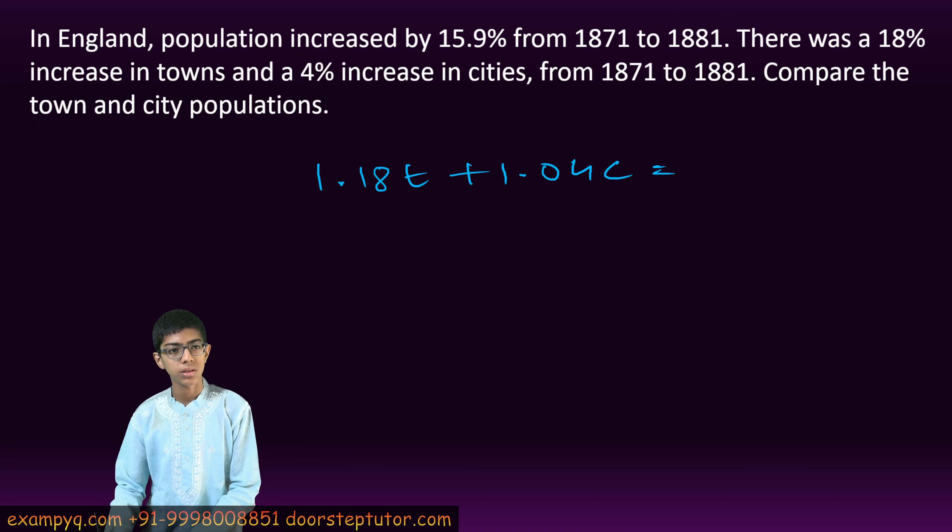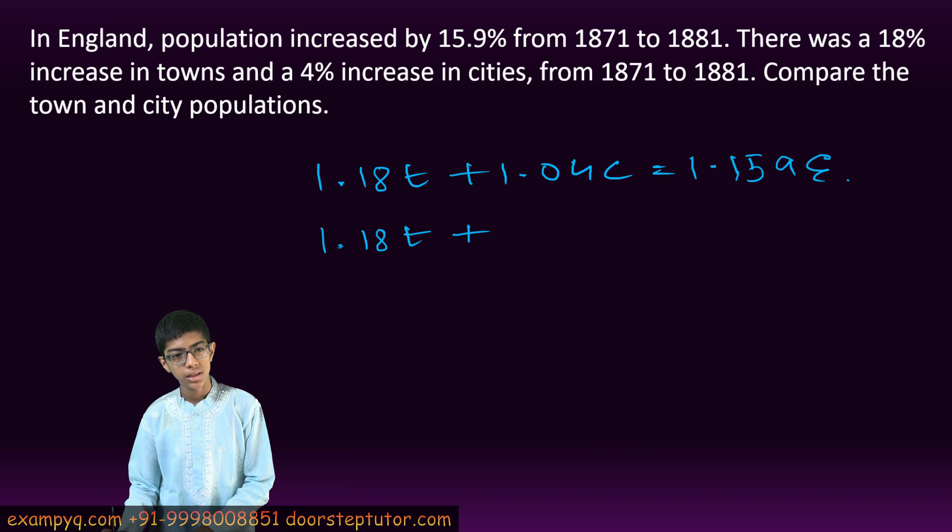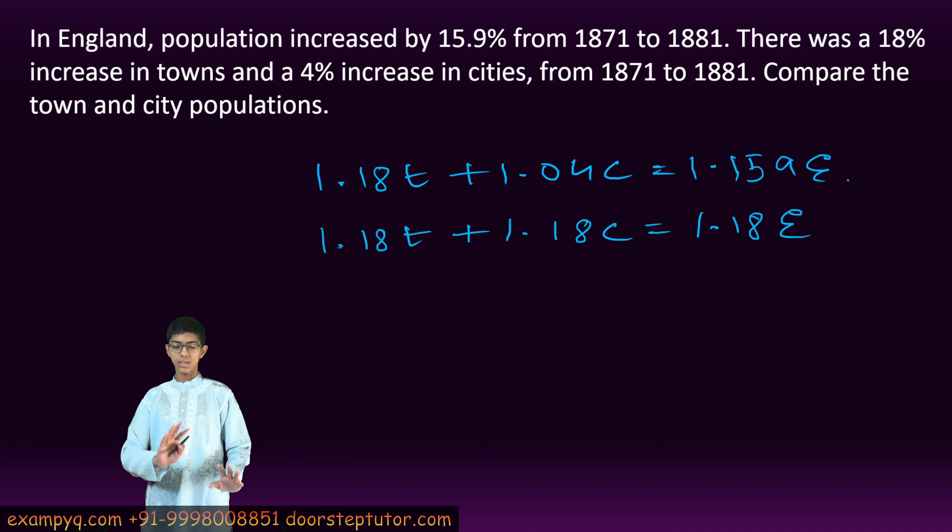Also, 1.18T plus 1.18C equals 1.18E. Multiplying both sides by 1.18 respectively in the first equation as we saw before.